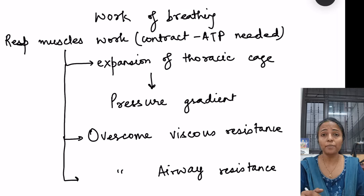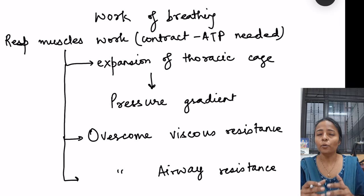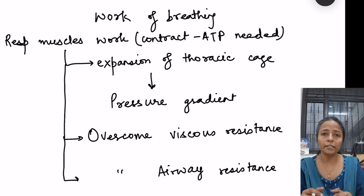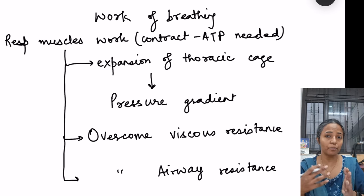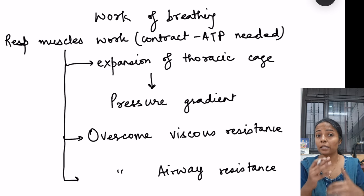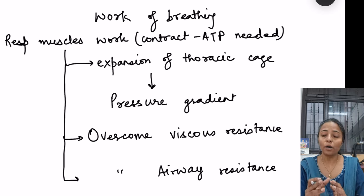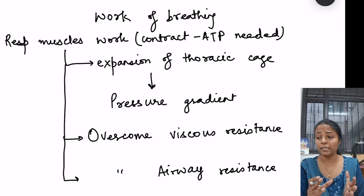Work is performed by respiratory muscles to cause expansion of the chest wall. Only then a pressure gradient is created so that air can move from outside to inside the lungs. This respiratory muscle work means there is consumption of energy, consumption of ATP, which is required to cause expansion of the thoracic cage. The thoracic cage structures — the lung and the chest wall — are elastic structures.